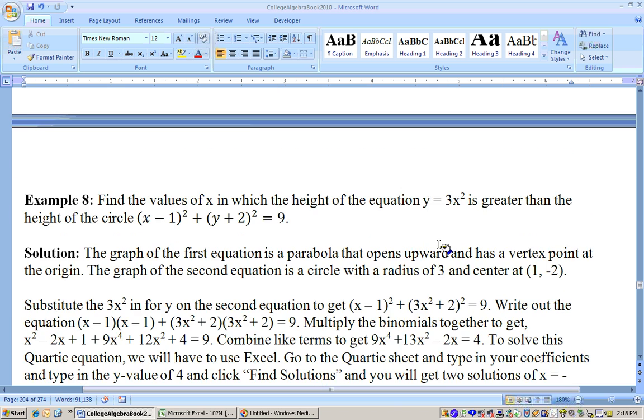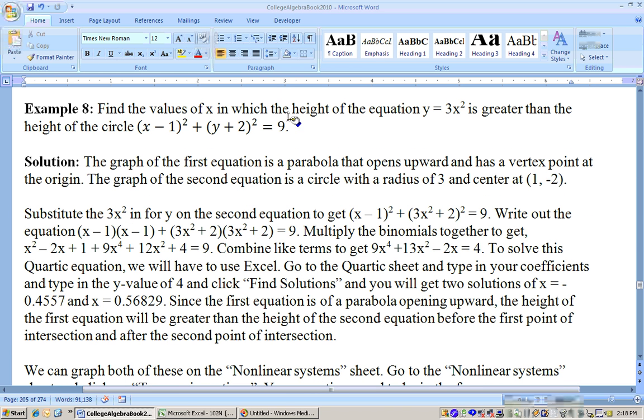And about 31.66 or about 31.65 on that. Let's go on to the next example. And it says, find the values on x in which the equation 3, in which the equation y equals 3x squared is greater than the equation of this circle. So x minus 1 squared plus y plus 2 squared equals 9. Now to solve this type of problem, this is a parabola, and this is a conic section. It's a circle.